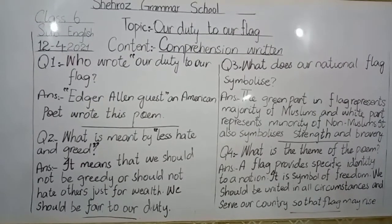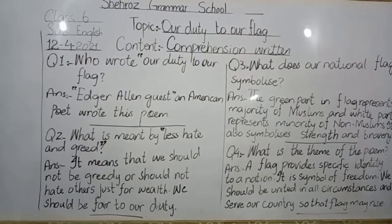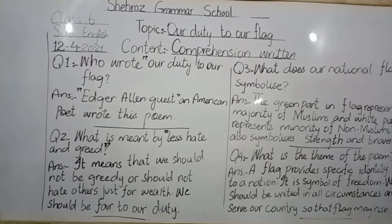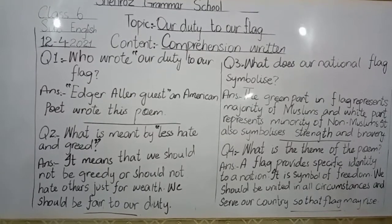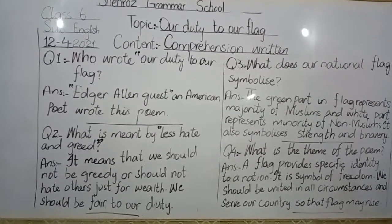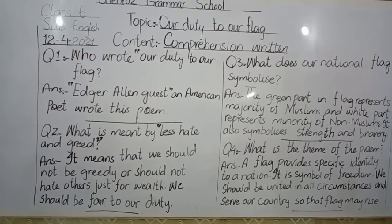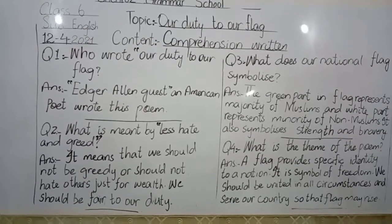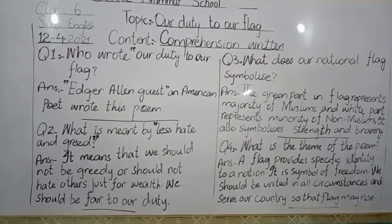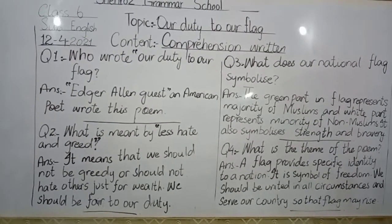It also symbolizes strength and bravery. Every country has its own flag that symbolizes different things. The star in our flag has five corners, representing the five pillars of Islam. The crescent symbolizes our strength and bravery — like a sword, showing how sharp and brave we are. The green color shows the Muslim majority, while the white part shows the non-Muslim minority.